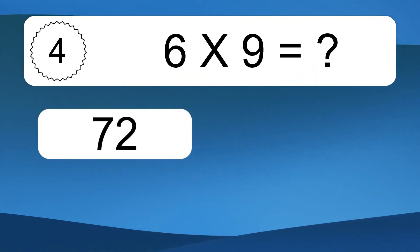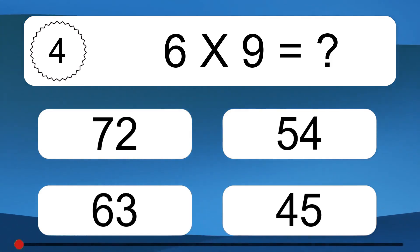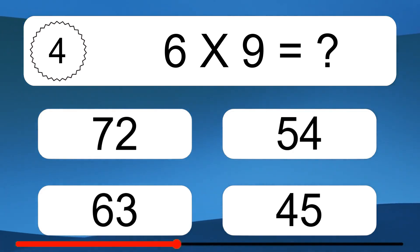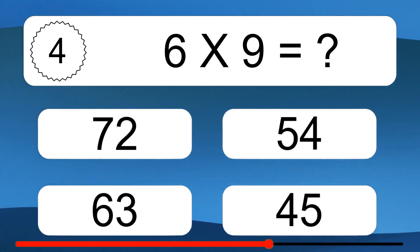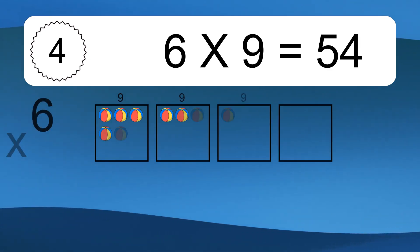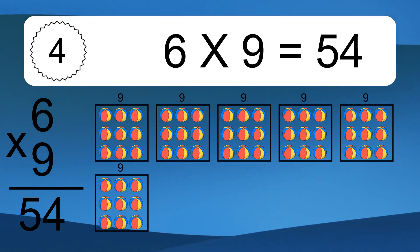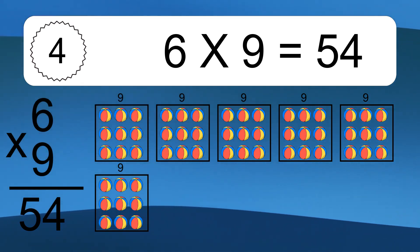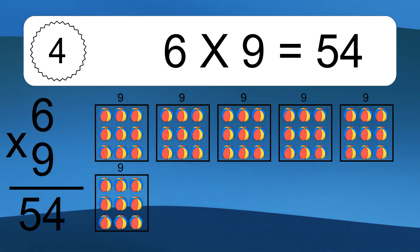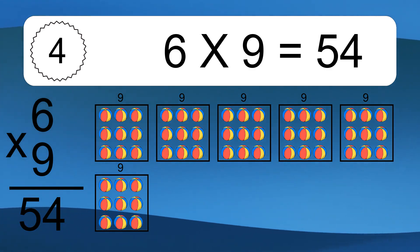Six times nine equals what? Six times nine equals 54. We have six boxes, and each box has nine colorful balls inside. If you count all the balls in all the boxes together, you will have six times nine balls. This equals 54 balls.